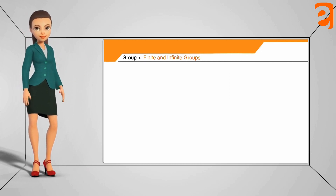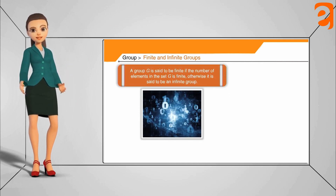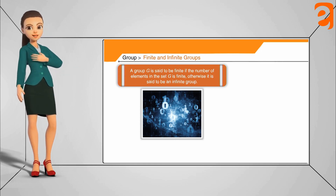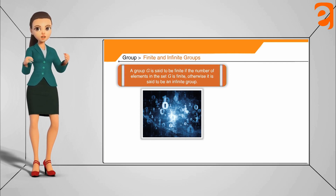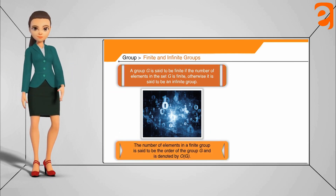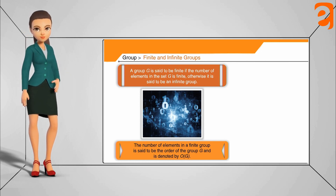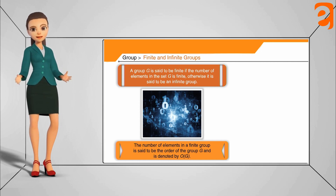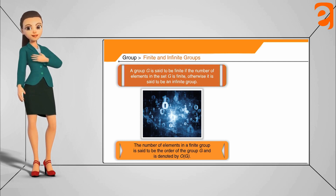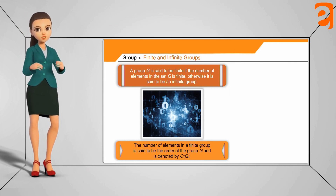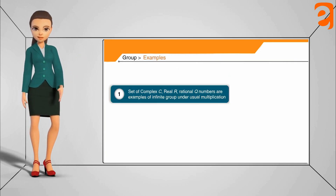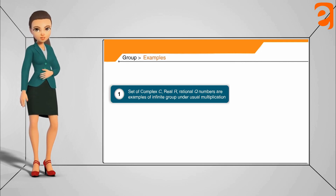Now let's discuss finite and infinite groups. A group is said to be finite if the number of elements in G is finite; otherwise it is called an infinite group. The number of elements in a finite group G is called the order of the group. For example, if a set G has four elements, its order is four.